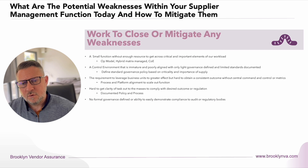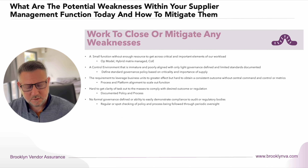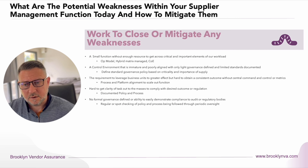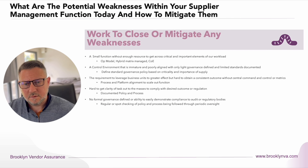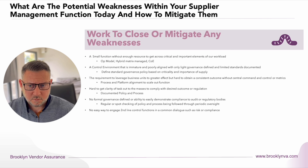This leads into having no formal governance defined or the ability to easily demonstrate compliance to audit or regulatory bodies. From a center of excellence and operating model perspective, we recommend doing regular spot checking — checking that policy and processes are being followed through periodic oversight. Did the activity that was meant to happen every three months against a critical supplier actually happen? Go back and find out where it failed — was it a process failure or a RACI accountability failure — and improve accordingly. If a regulator comes in and you can show that periodic check-in and challenge around quality and control, you'll have a much easier discussion.